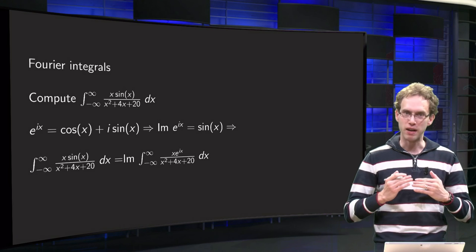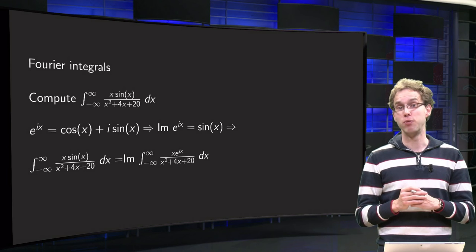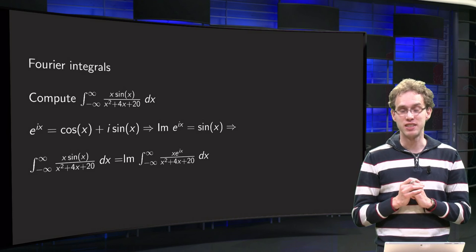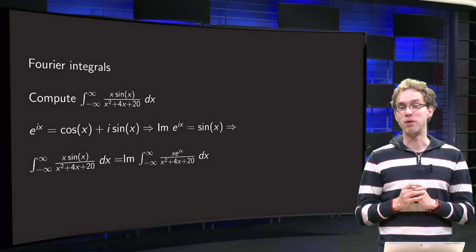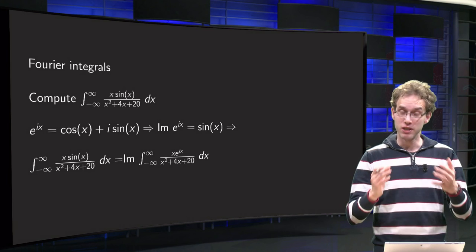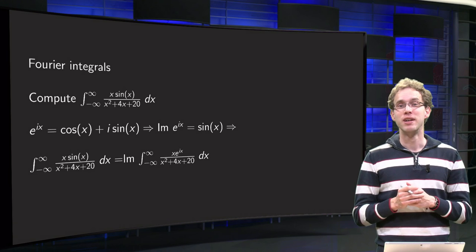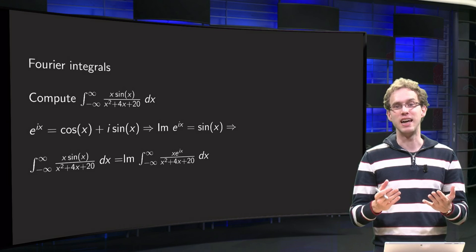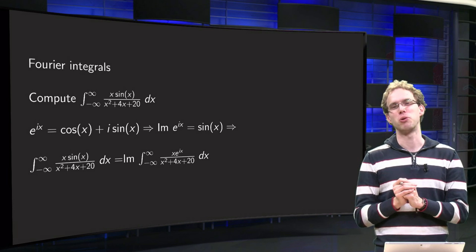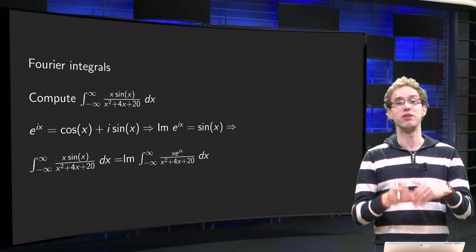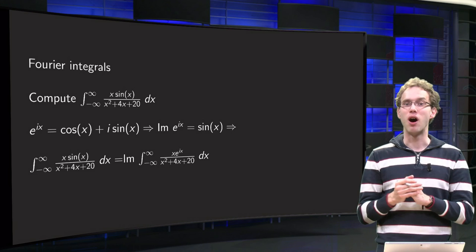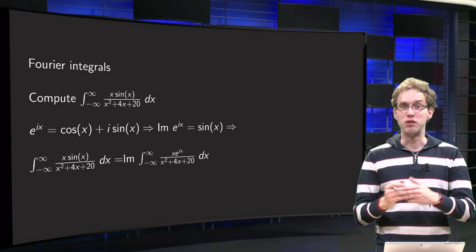Before drawing a contour, you have to step back and think about what would happen if you just substituted z for x: sine(z). Sine is bounded as a real function, but not as a function of a complex variable — sine(z) will blow up. So if you use a function with sine(z), you can take your contour along the real axis, but when you close it in the upper half-plane, sine(z) would blow up there. That won't work, so you have to come up with some other function.